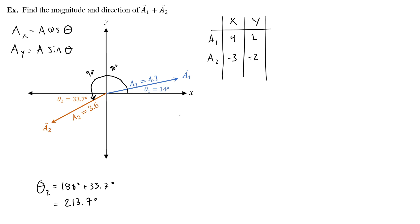So now we have everything that we need to find the x component for our sum and the y component for our sum. The x is going to be 4 plus negative 3, which is a positive 1. And then the y component is going to be 1 plus negative 2, which is negative 1.